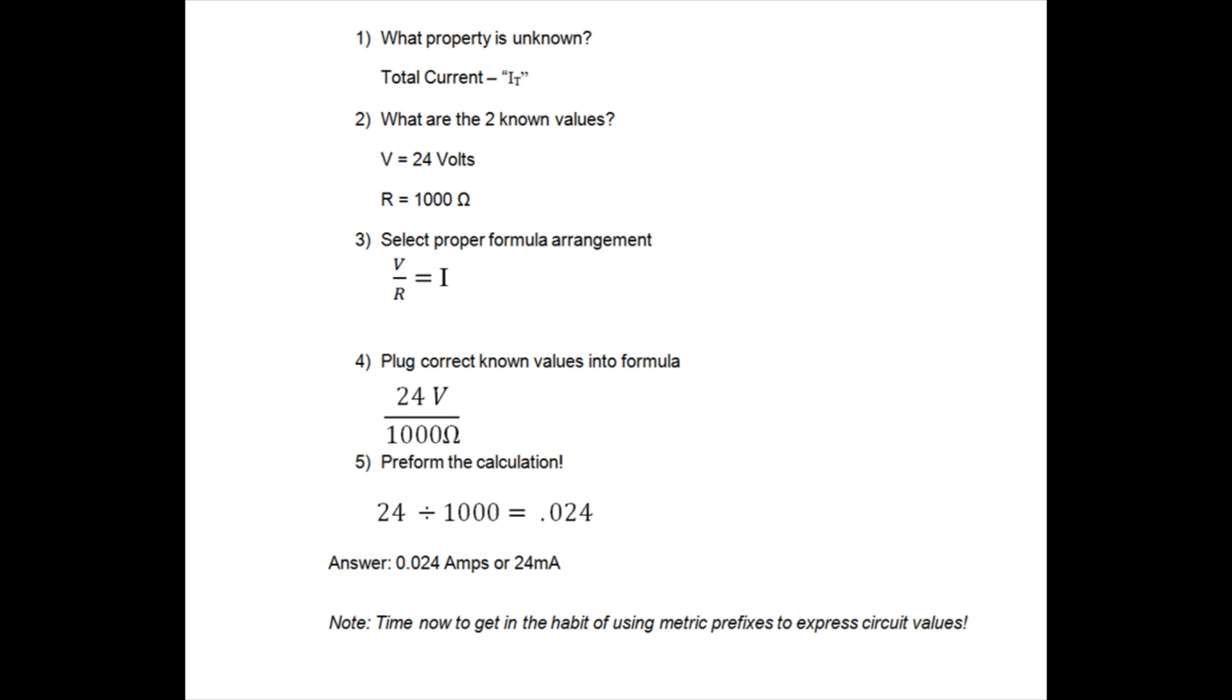Number three, select the proper formula arrangement, which is volts divided by resistance equals current. Plug the correct known values into the formula, so that would be 24 divided by 1,000, and then perform the calculation. 24 divided by 1,000 equals .024.